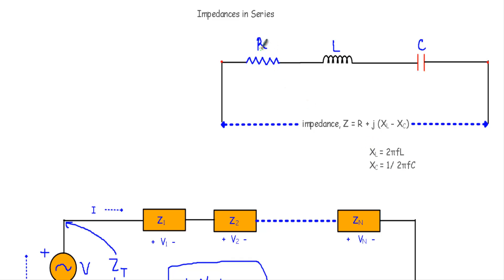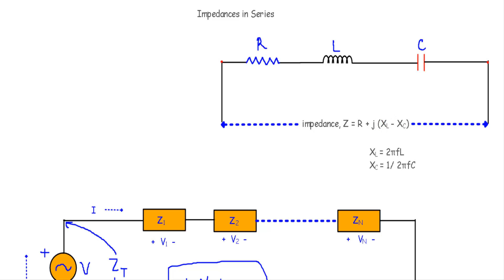If in a branch we have only a resistor, then XL and XC will be equal to zero. If we have only an inductor, R and XC will be zero. If we have only a capacitor, XL and R will be zero. So we can use the general formula Z = R + j(XL - XC), and any absent element will simply be set to zero.